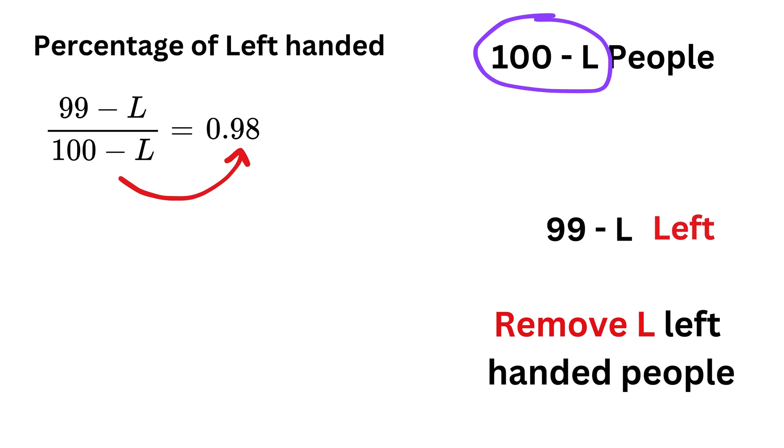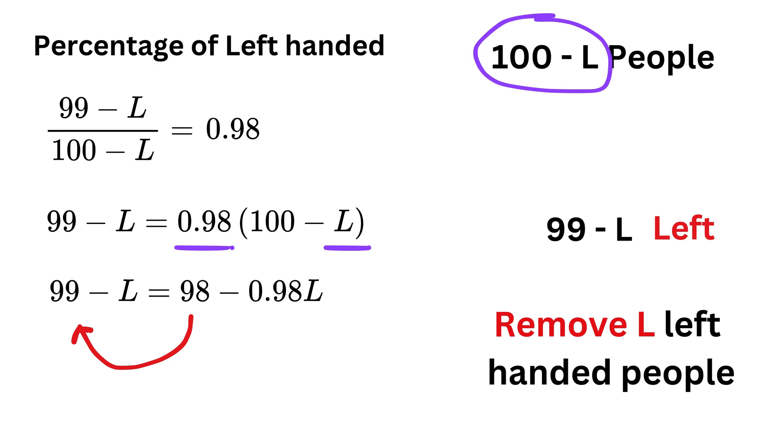Now, take this 100 minus L here to get this. Now, expand the brackets to get this as 98, and this as 0.98L. Now, take this 98 on the left-hand side, and L on the right side.